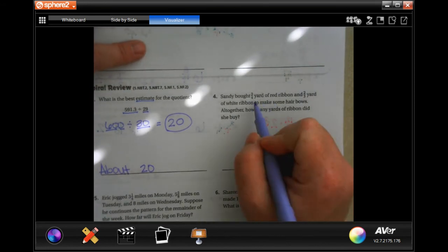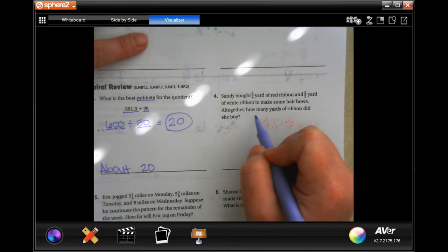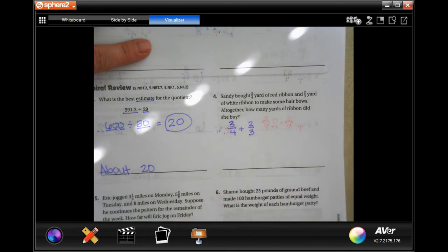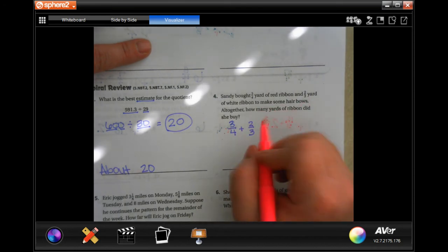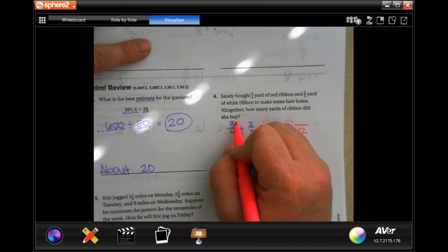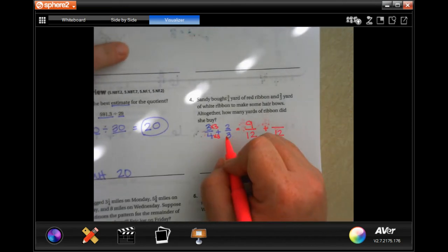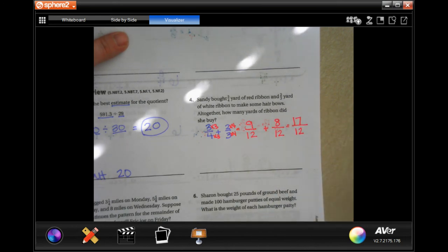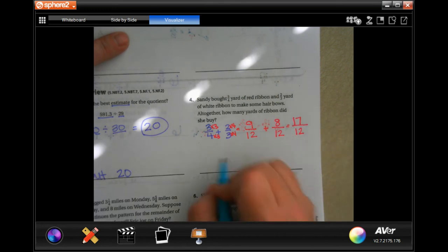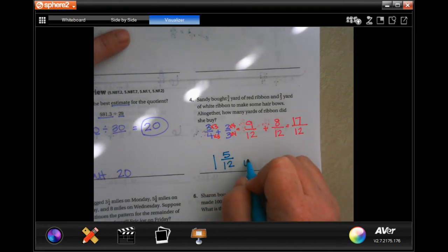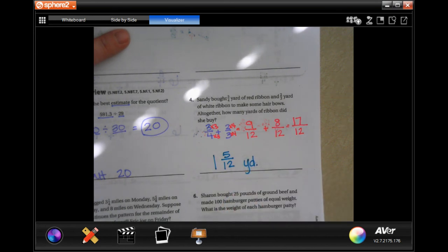Sandy bought three-quarters yard of red ribbon and two-thirds yard of white ribbon to make some hair bows. Altogether, how many yards of ribbon did she buy? So, three-quarters plus two-thirds, so what we need is a common denominator. Well, between 4 and 3, that's going to be 12. To get 4 to 12, I had to multiply it by 3, which means I need to multiply the top by 3, which is going to be 9. To get 3 to 12, I had to multiply it by 4, which means I need to multiply the top by 4. 2 times 4 is 8. So, when I add those up, I'm going to get 17 over 12. Well, 12 is going to go into 17 one time. 1 times 12 is 12, and 17 minus 12 would be 5. And I'm going to keep my denominator. 1 and 5 twelfths of a yard.